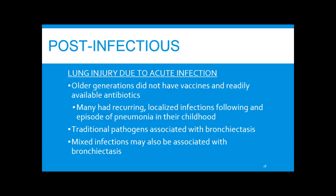Regarding lung injury due to acute infection: older generations did not have vaccines or antibiotics readily available and were recurrently exposed to traditional pathogens — Strep pneumo, H. flu, adenovirus, measles — and recurrent exposure to these infections led to bronchiectasis. Mixed infections, most commonly from oral flora from aspiration, can cause the same process.